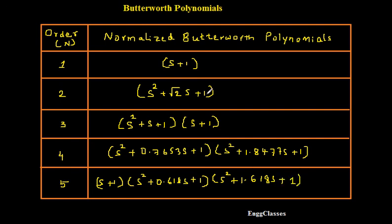These are the first 5 Butterworth polynomials for orders 1, 2, 3, 4, 5. Similarly, we can have order 6 and 7, but they're not very useful in numerical problems. We may go up to the highest order that is 5, and I recommend you remember this table to solve numerical problems on Butterworth filters.